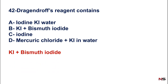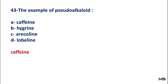Question 43: An example of a pseudo alkaloid — option A) caffeine, B) hygrine, C) emetine, D) lobeline. The correct answer is caffeine. Pseudo alkaloids are also called purine alkaloids, and caffeine is the classic example.